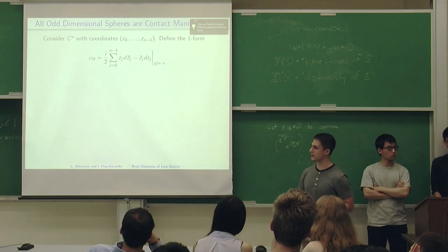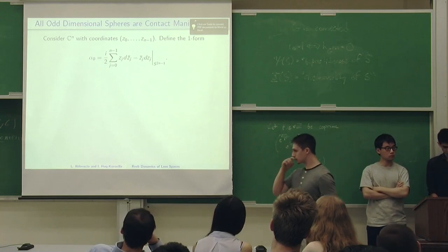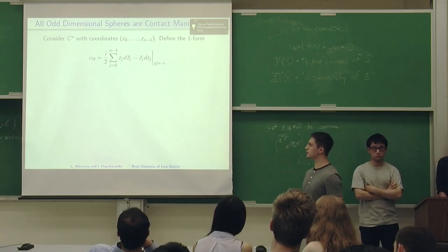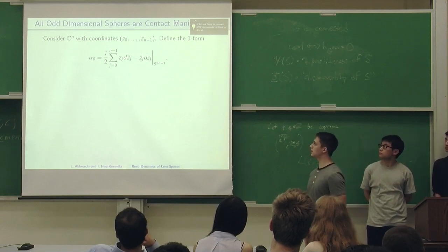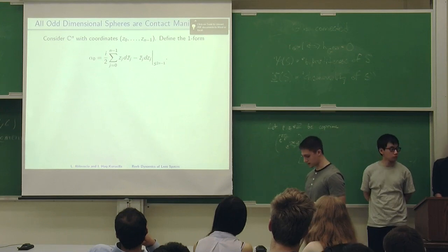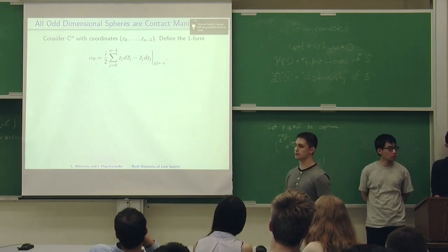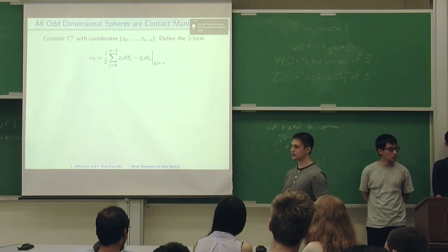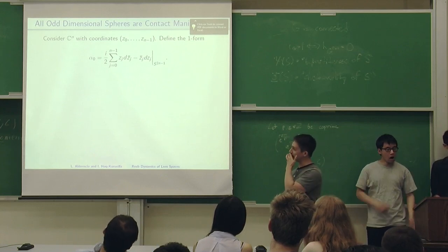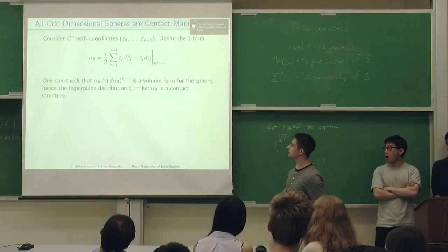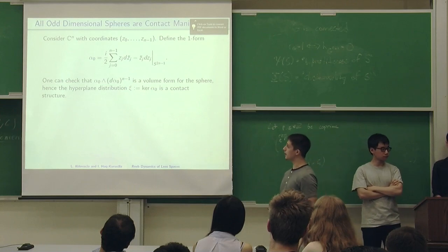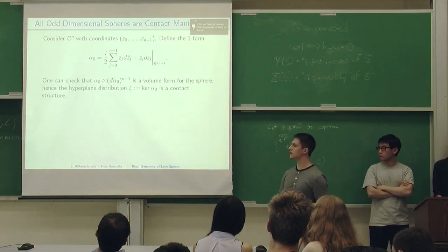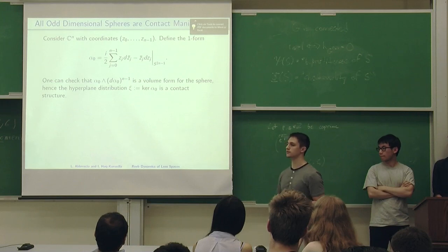Let's do another example. We know that odd dimensional spheres can be embedded in R2n, which can be identified with CN with these coordinates. If we define this one form alpha 0 and restrict it on the odd dimensional sphere, then it's a contact form. You can check for yourselves that alpha 0 wedge d alpha 0 to the n minus 1 is a volume form for the sphere, so it doesn't vanish anywhere. The kernel of this is what we call the standard contact structure on the sphere.